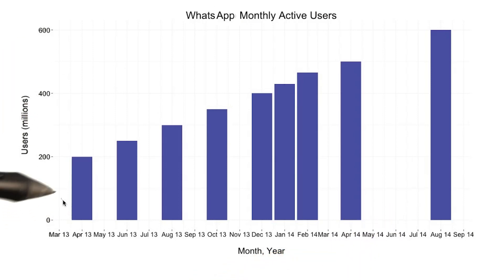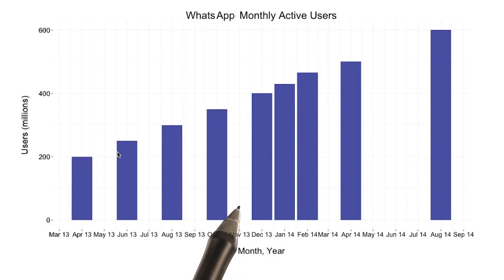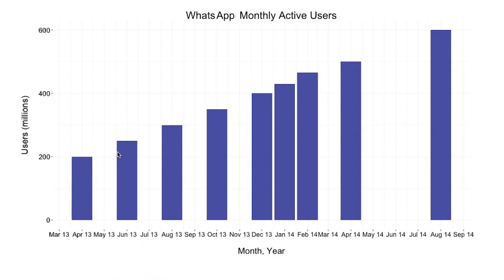It'd probably be better to show this as a line chart over time, but I didn't want to give the impression that these points were actually in the data. To calculate any x-day active users, you simply total the number of unique users who initiated sessions on your website or mobile application from a starting date all the way until the ending date. You might also look at patterns over weekday or weekend activity to spot trends.